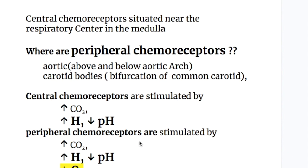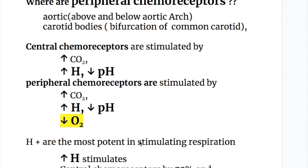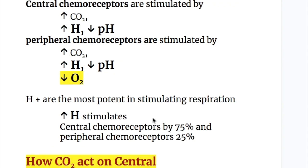Central chemoreceptors are stimulated by increased carbon dioxide, increased hydrogen ion concentration, and decreased pH. Peripheral chemoreceptors are stimulated by increased carbon dioxide, increased hydrogen ion concentration, decreased pH, and also by decreased oxygen.